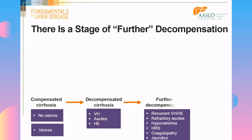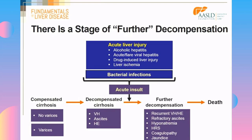Usually there's an acute insult that leads to further decompensation — most likely bacterial infections, but also distinct acute liver injuries such as alcoholic hepatitis, acute flare of viral hepatitis, drug-induced liver injury, and liver ischemia. Importantly, this acute insult not only sends patients from decompensated cirrhosis to further decompensation, but will also make compensated patients decompensated. This is why we have to prevent this acute liver injury from occurring.